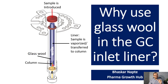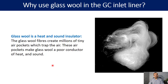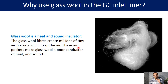Today's topic is why this small amount of glass wool is important and required in the inlet liner. Though it is a small amount, it plays a very important role in gas chromatography. You can see how the glass wool looks like — it just looks like cotton. Glass wool is a heat and sound insulator. The glass wool fibers create millions of tiny air pockets which trap the air, and these air pockets make glass wool a poor conductor of heat and sound.